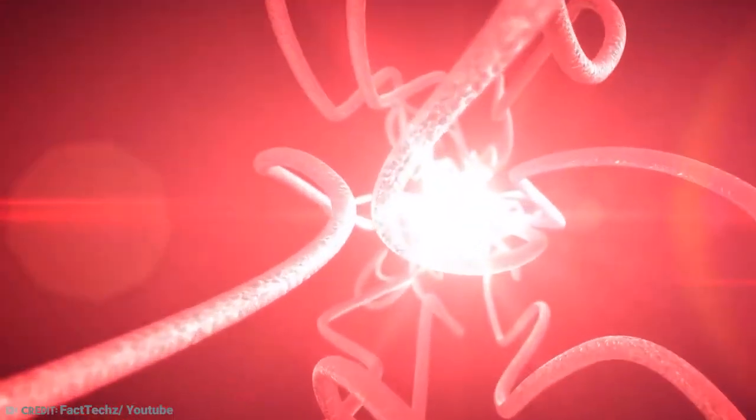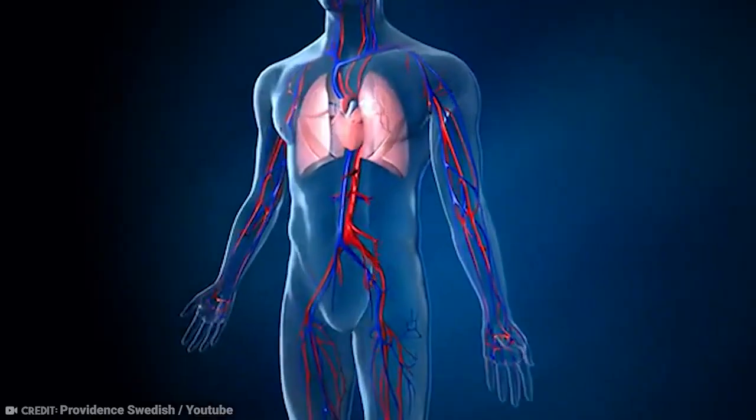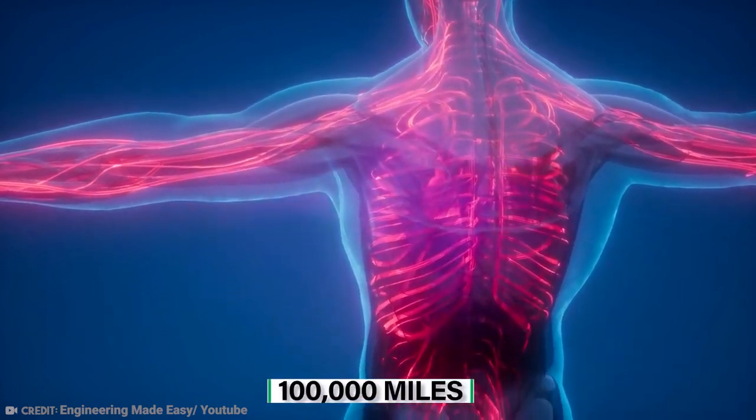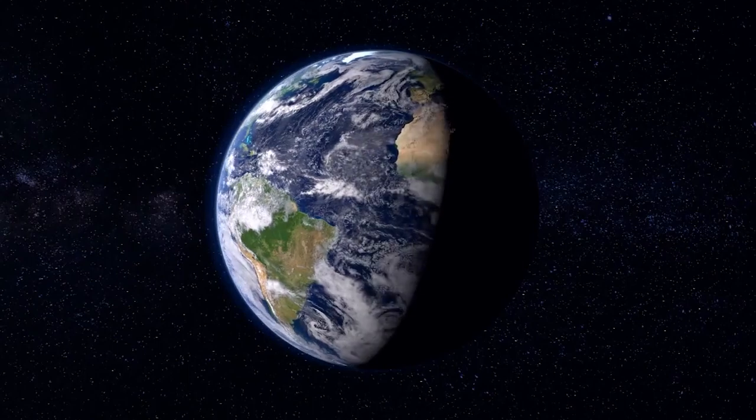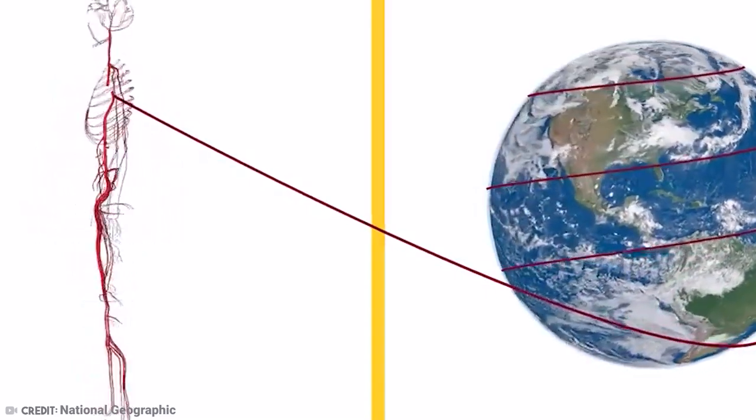The extensive network of blood vessels in a typical child would span more than 60,000 miles if laid end to end. They would extend about 100,000 miles in a typical adult. The circumference of the earth, in contrast, is roughly 25,000 miles. This implies that a single person's blood vessels may circle the planet several times.